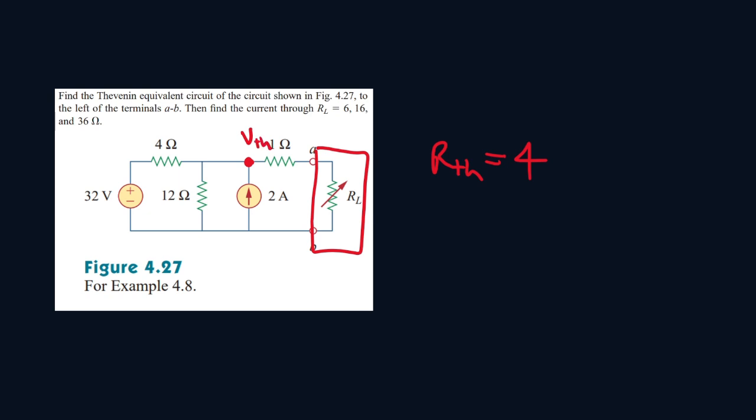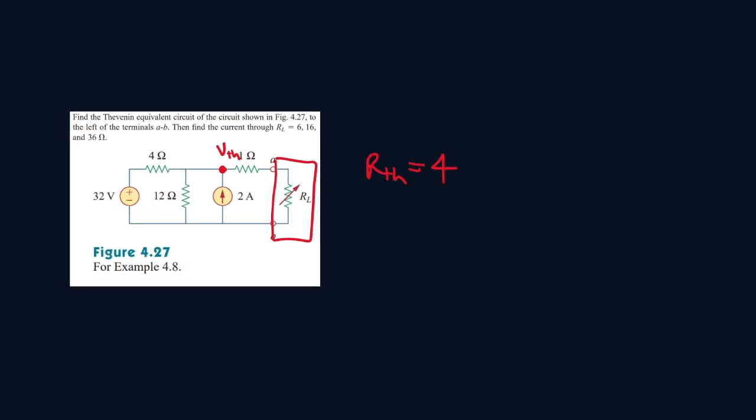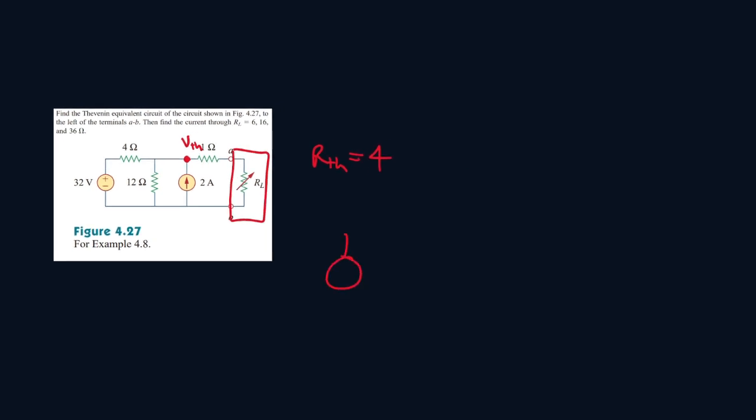So the Thévenin voltage will be at this portion. So pretty much just think the region where if we move beyond it, the current will be 0. The region before we hit that point, that will be the Thévenin voltage area. So now we pretty much solve the circuit as it is. So we just ignore all of this portion. And then we just find VTH over here.